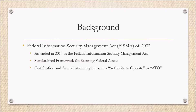Back in 2002, the federal government started to realize it was becoming increasingly reliant on computer systems to process, store, and transmit sensitive government information. Because of this, they drafted the Federal Information Security Management Act, which standardized the framework used to protect federal assets from threats. It included things like requiring a plan for security and incorporating periodic review into the process to ensure that controls were still adequate over the course of time.